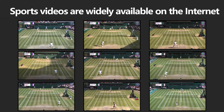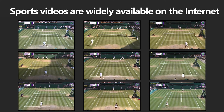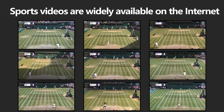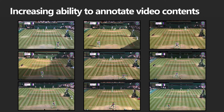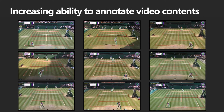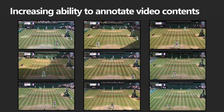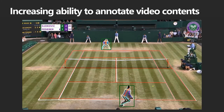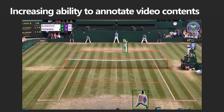These days, videos of professional sporting events, like these videos of Wimbledon, are widely available on the internet. Meanwhile, it is also possible to annotate these videos with off-the-shelf computer vision models such as human segmentation, pose keypoints, and court lines.